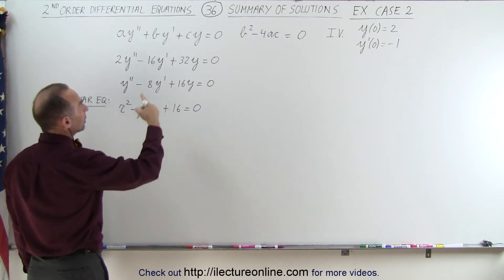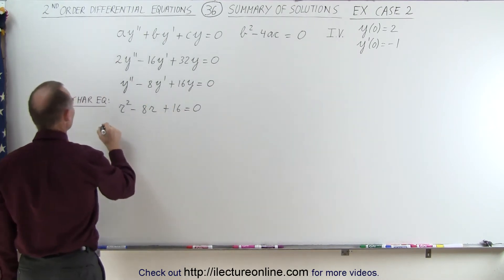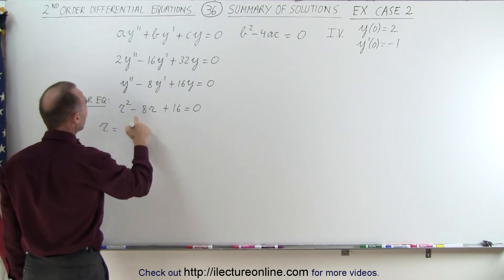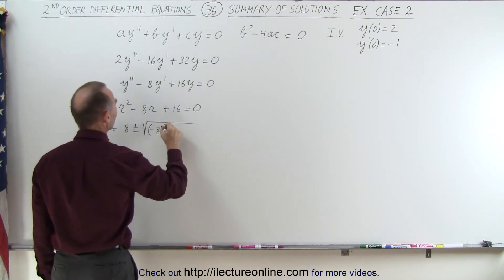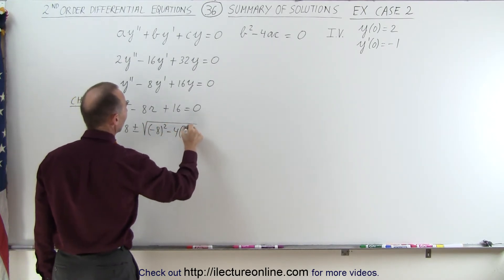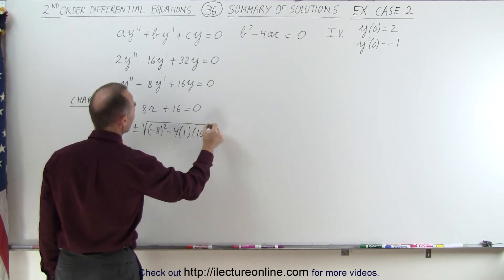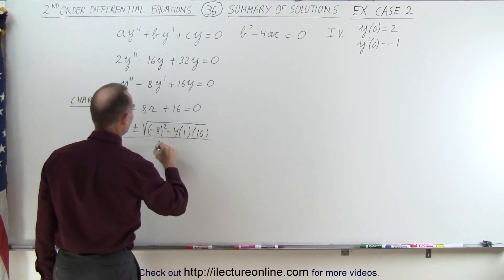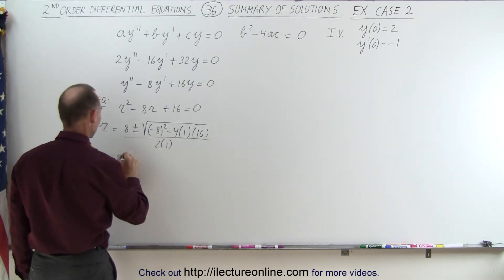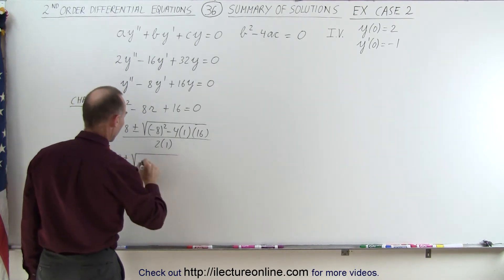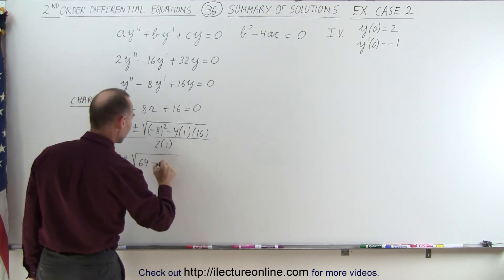And using the quadratic formula, we can say that r is equal to minus b, which would be plus 8, plus or minus the square root of b squared, which is minus 8 squared, minus 4 times a times c, all divided by 2a. And simplifying this, we get r is equal to 8 plus or minus the square root of 64 minus 64 divided by 2.